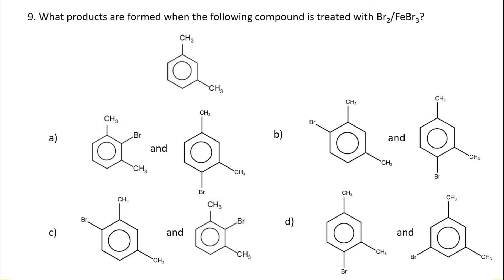Next question: what products are formed when meta-xylene is treated with bromine and FeBr3? In meta-xylene, both CH3 groups are ortho-para directing. One particular position is ortho to the first methyl and para to the second methyl; another position is para to the first methyl and ortho to the second methyl. There is also another ortho position that is sterically hindered, so no substitution takes place there. The correct answer is option B.